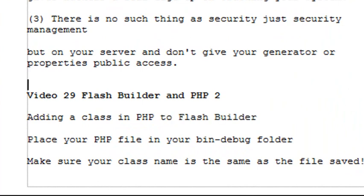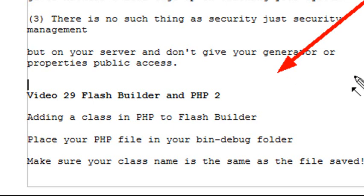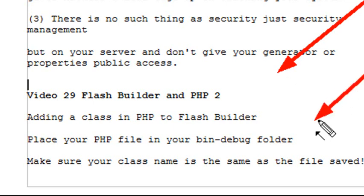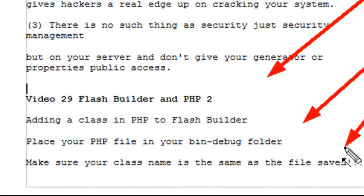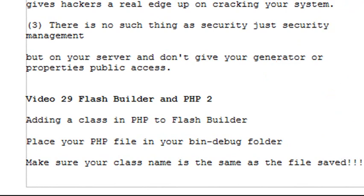What we're going to do today is add our PHP to Flash Builder. We're going to place our PHP file in our bin-debug folder. One thing you want to make sure is that the name of the class is the same as the name of the saved file. If you don't do that, you are going to have problems.